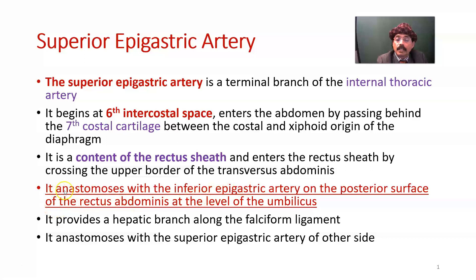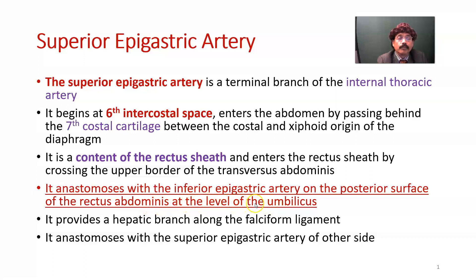It anastomoses with the inferior epigastric artery on the posterior surface of the rectus abdominis muscle, at the level of the umbilicus. This is the usual site of anastomosis.